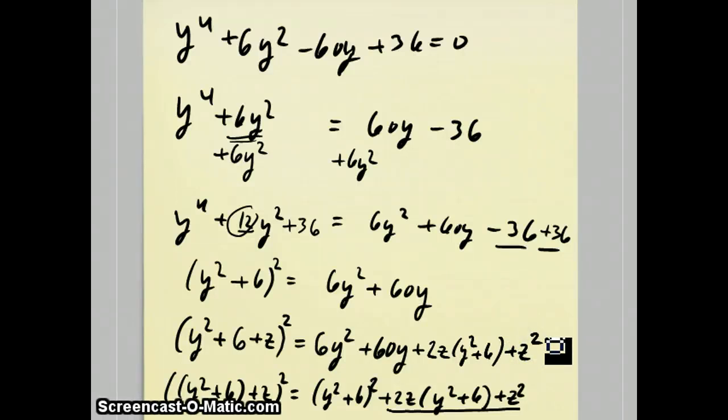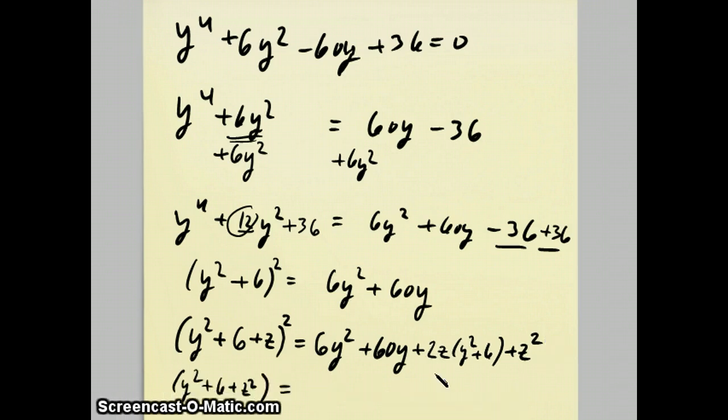Now, when I combine like terms, the 2z gets multiplied by the y², and that gets combined with the 6, so I end up with (2z + 6)y². There's only one y term, that's the 60y, so I'll just put that in here. As far as the constant term, the 2z gets multiplied by the 6, and the z² is there also, so I have a constant term of z² + 12z.